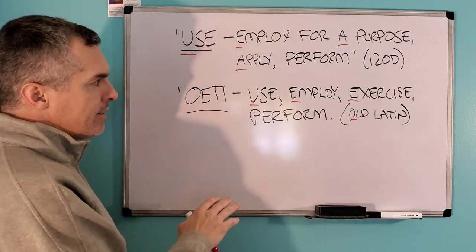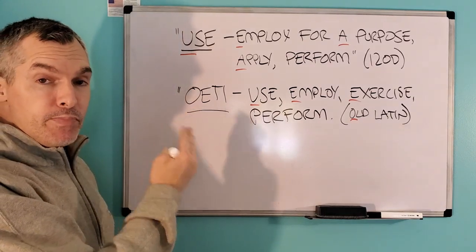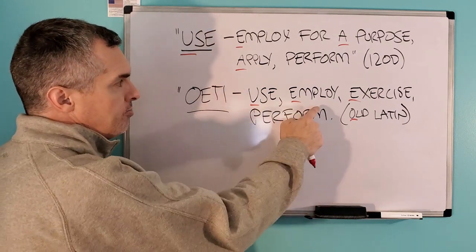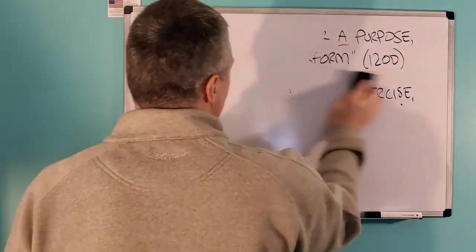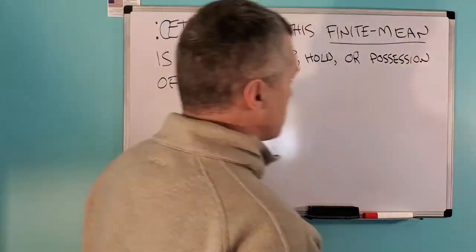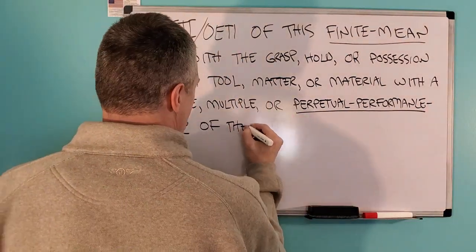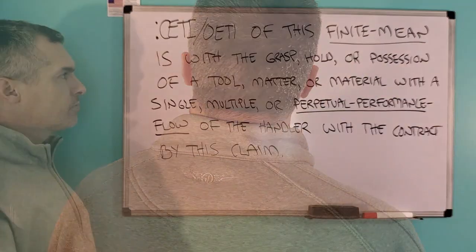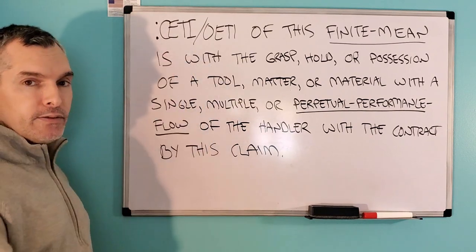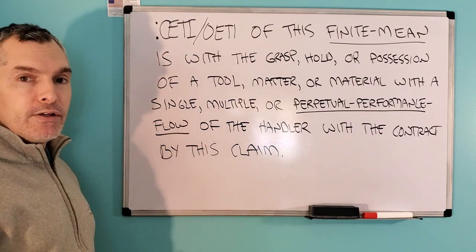I also found that in Old Latin, this word comes from oiti, which has two vowels at the beginning of a word, which is positive performance, which I also give closure to in the video I just mentioned. So oiti means use, employ, exercise, perform. As you can see here, I have shared with you my finite mean from my dictionary of the word oiti, which I use in place of the word use, which is negative performance. Oiti is positive performance because of the two vowels at the beginning.